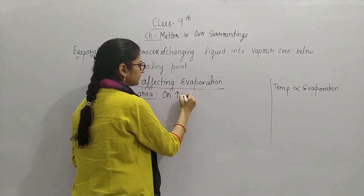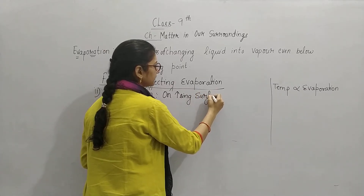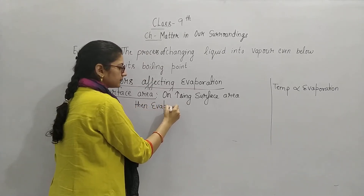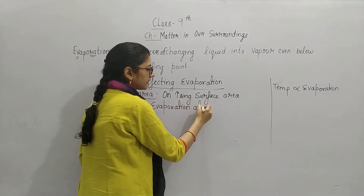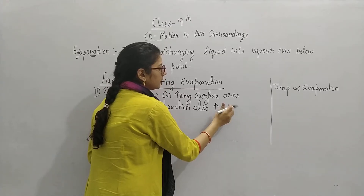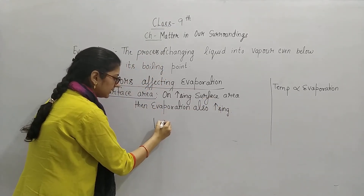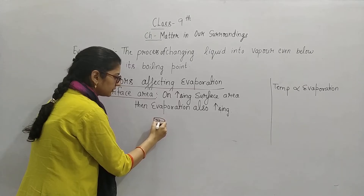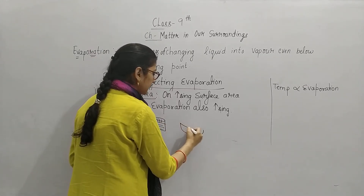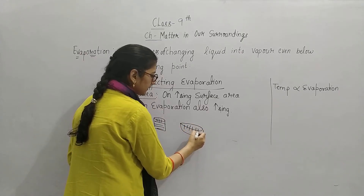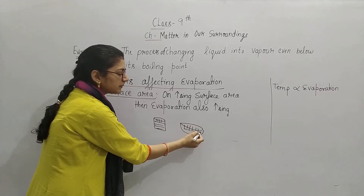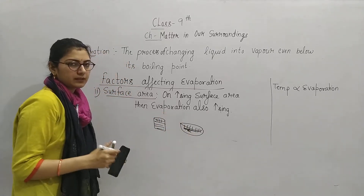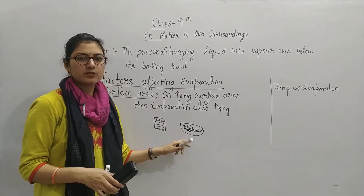On increasing surface area, evaporation also increases. ऐसा क्यों हो रहा है? अगर आपने cup में लिया तो vapors को सिर्फ उतना ही area मिल रहा है जाने के लिए, लेकिन यही चीज़ bowl में ले ली तो ज़्यादा area मिलता है. इसलिए bowl में cup से fast cool down हो जाएगा.